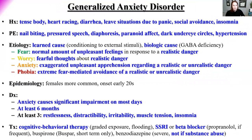Generalized anxiety disorder can be due to one of two things. First, a learned cause — some kind of conditioning to external stimuli. For example, if a child was bitten by a dog, they may have anxiety around dogs as an adult. There's also a biologic etiology: a deficiency in GABA, a neurotransmitter, can cause or contribute to generalized anxiety disorder.